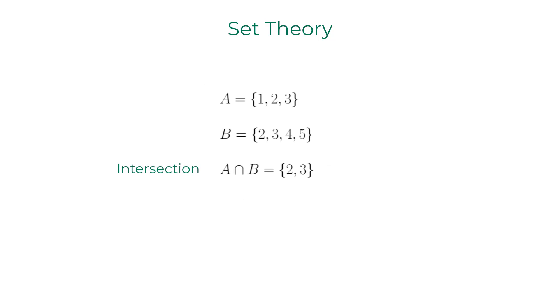The intersection of A and B, written as A intersection B, is the set of elements that are both in A and B.